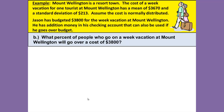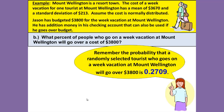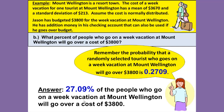Now we're ready to do Part B. What percent of people who go on a week vacation at Mount Wellington will go over a cost of $3,800? Well, remember that the probability that a randomly selected tourist will go over $3,800 is 0.2709. So the answer is 27.09% of the people who go on a week vacation at Mount Wellington will go over a cost of $3,800.